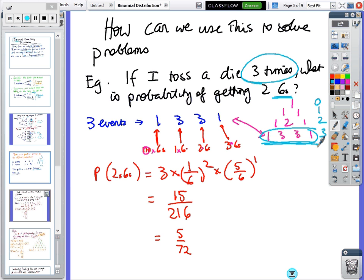The line means there's one way of getting no sixes, three ways of getting one six, three ways of getting two sixes, and one way of getting three sixes. To get two sixes, there are three different ways. Each six has a probability of 1/6 and you need two of them, and the not-six is 5/6 and you need one of them. So the probability of two sixes is 3 × (1/6)² × (5/6)¹. Then you multiply and simplify down to get 15/216 = 5/72.